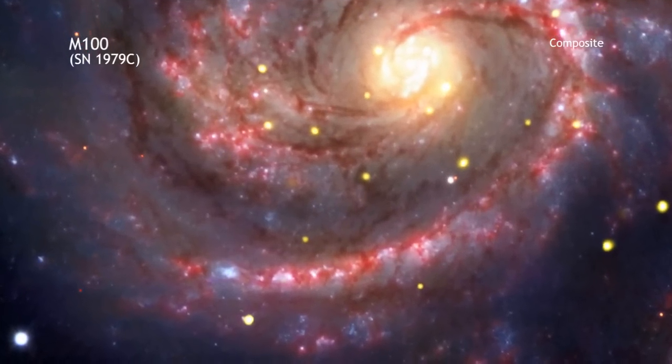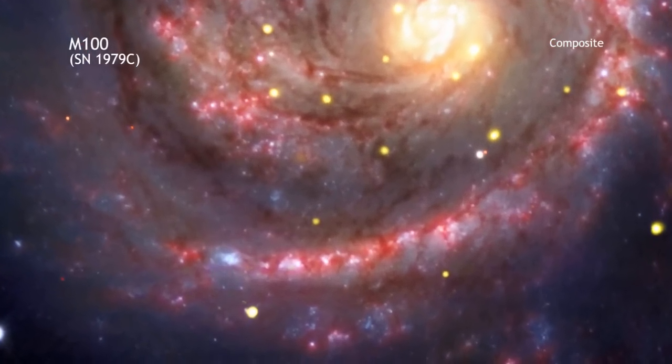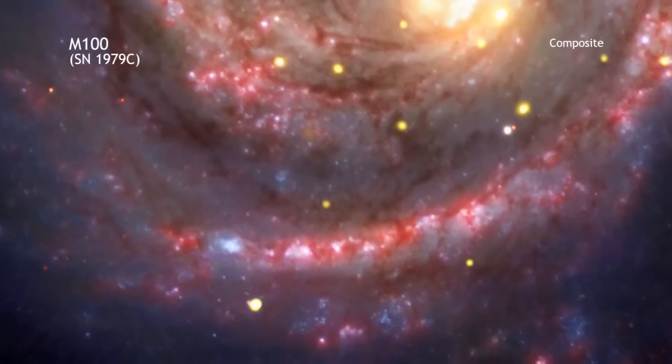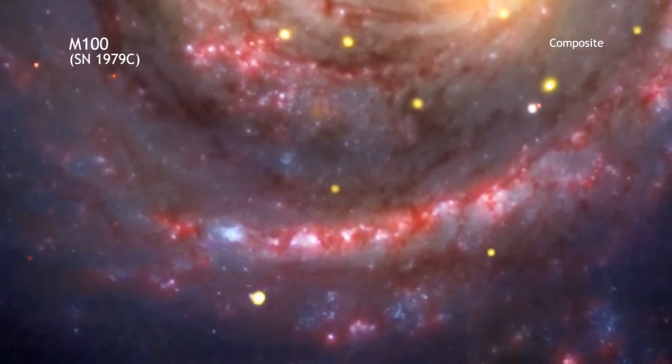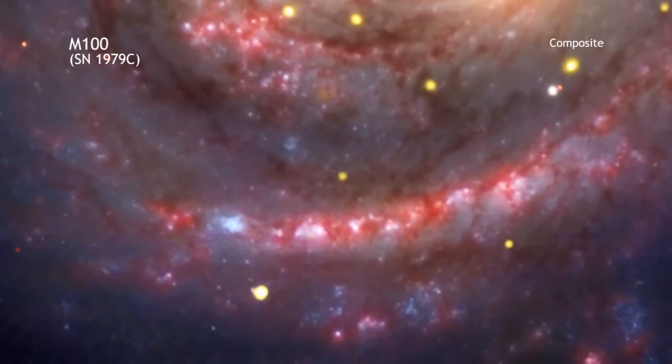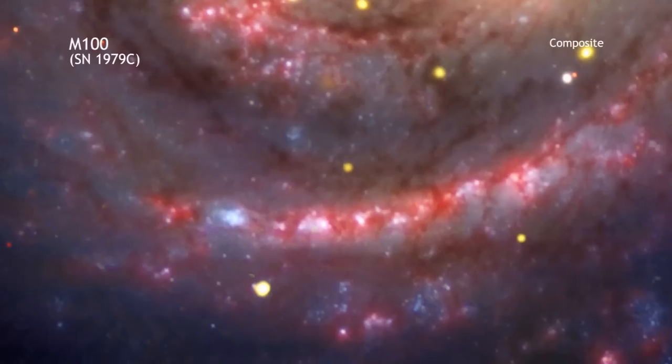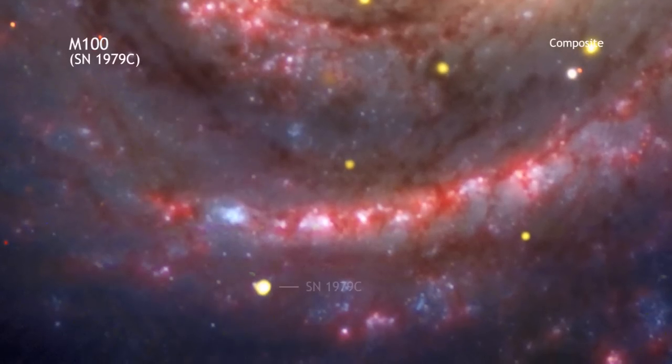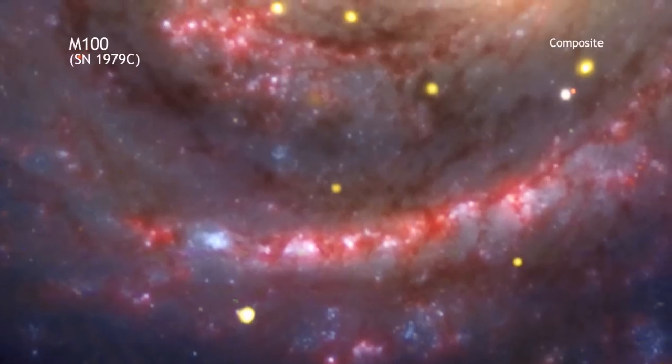The youngest known black hole in our cosmic neighborhood may have been found, using NASA's Chandra X-ray Observatory and other telescopes. Evidence for this very young black hole was found in a supernova called 1979C, seen to explode about 30 years ago.